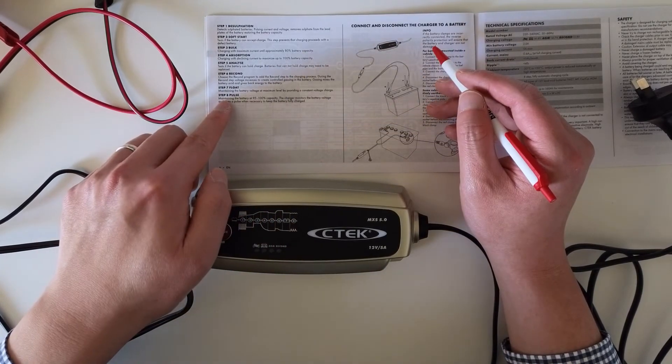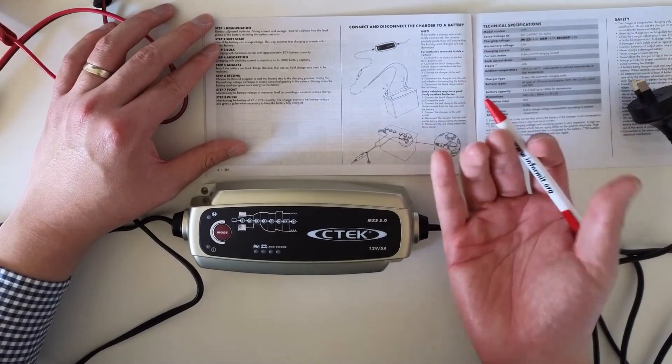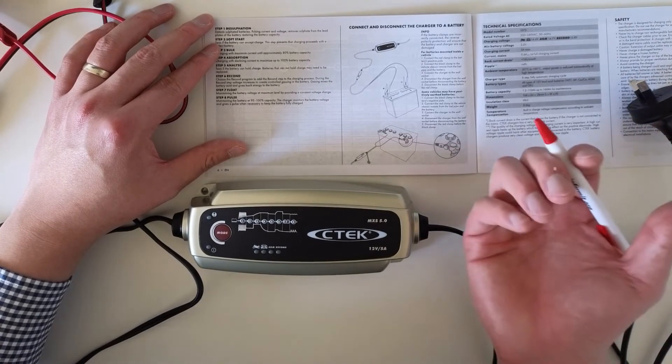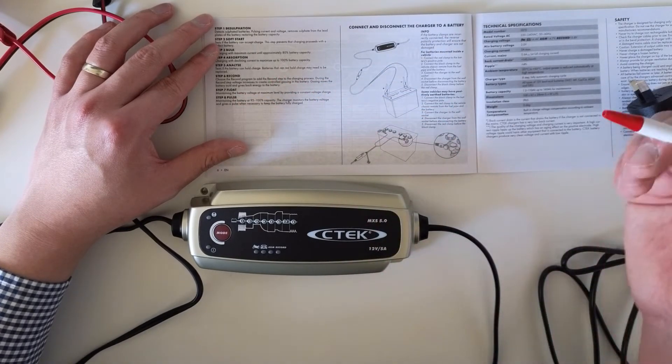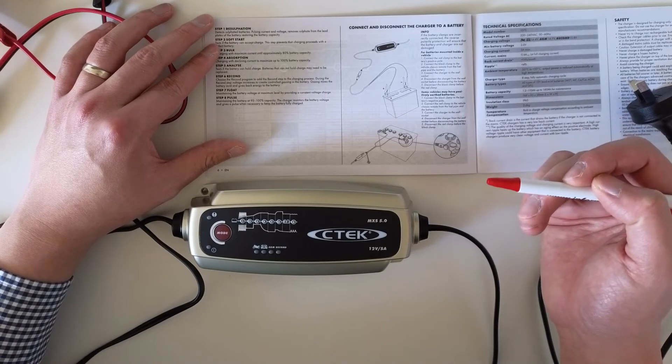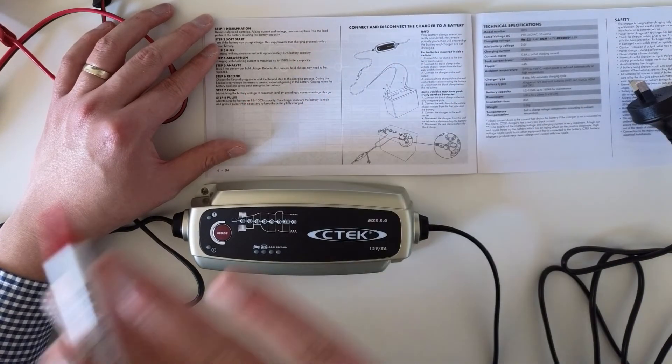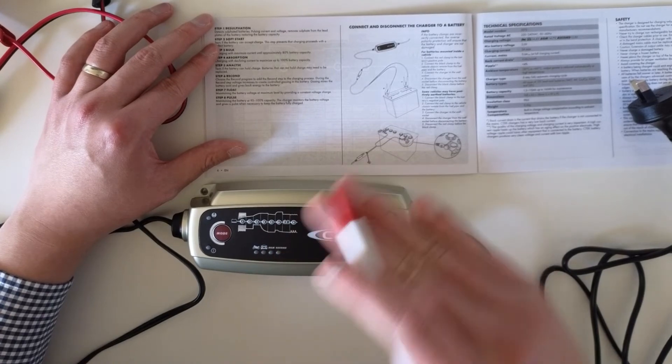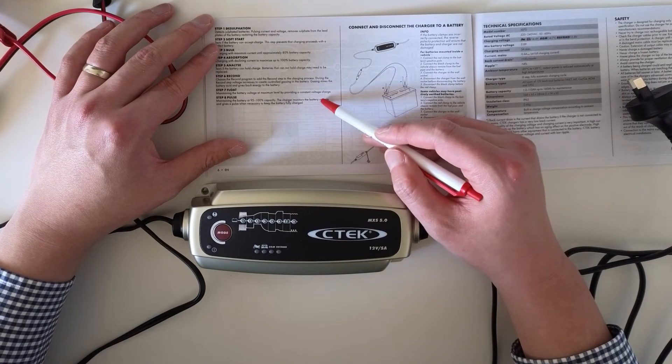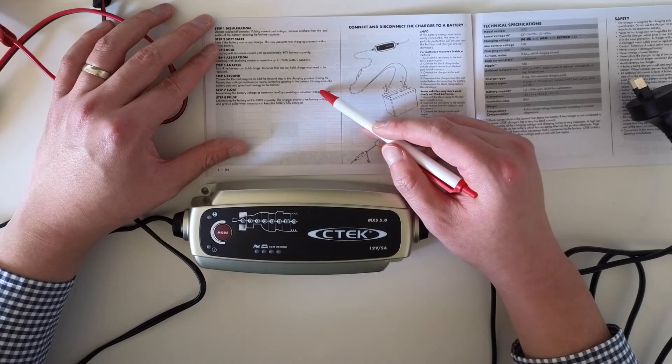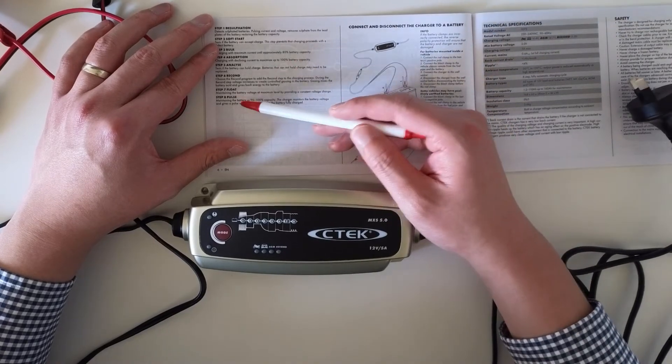It's confusing because to my understanding step seven and step eight are independent. You can either do float or you can do pulse. Pulse meaning you will detect the level of charge, if it's below 95 then you will send pulse to it to charge. But for float that means you will maintain that level by constantly charging the battery. I don't know how to select the two or how they are related. I might need to send an email to their support to ask what's the difference, or how to use step eight.